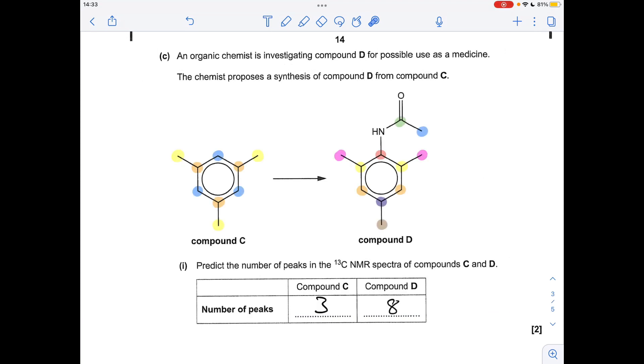Part C, predict the number of peaks in the carbon 13 NMR spectra for C and D. In compound C we've got some equivalent carbon environments. I'll just explain this colour scheme: these yellow ones here they're all equivalent, as are the blue ones, as are the orange ones. So three peaks in the carbon 13 NMR for C.